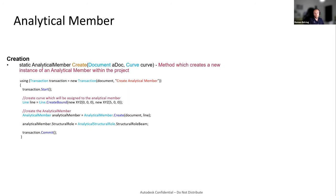Creating an analytical member is pretty easy. The Create method receives a document and a curve. The curve must be a line, an arc, or an ellipse — splines are not supported. Here's a small sample: create a line, then create an analytical member, and after that assign a structural role.